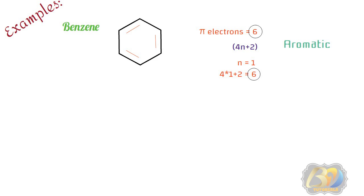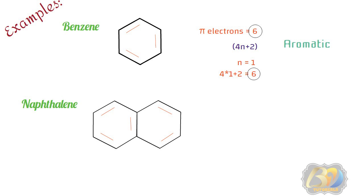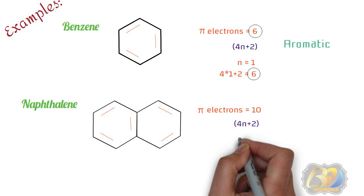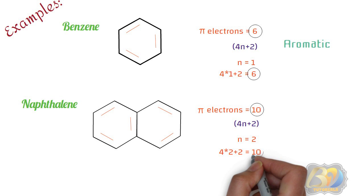The next example is naphthalene. Naphthalene is also cyclic and planar, all ring carbon atoms are sp2 hybridized, and it contains alternate single and double bonds. Naphthalene has 5 pi bonds, meaning it contains 10 pi electrons. For 4n+2 with n=2: 4×2+2 = 10. The number of pi electrons and the value of 4n+2 are the same. Hence, naphthalene is aromatic.